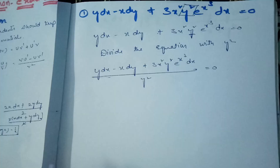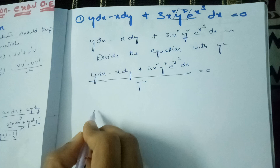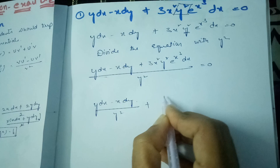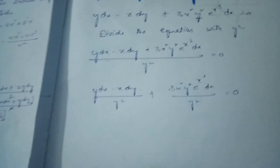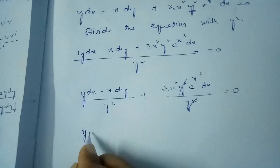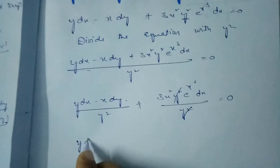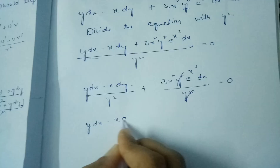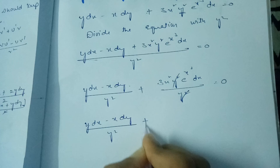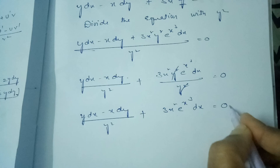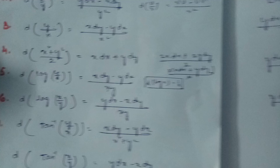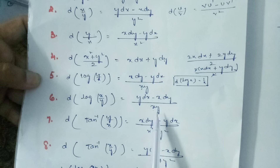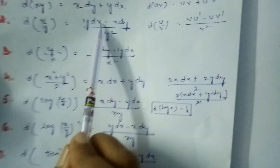After dividing by y², it becomes: (y dx minus x dy) / y² + 3x²y² · e^(x³) dx / y² = 0. The y² cancels, leaving: (y dx minus x dy) / y² + 3x² · e^(x³) dx = 0. Checking the formulae, the derivative of x/y is exactly (y dx minus x dy) / y².